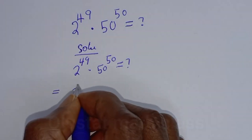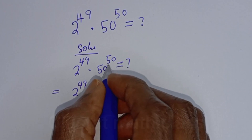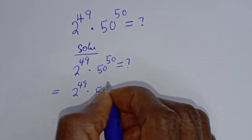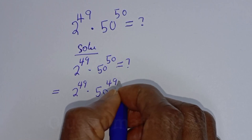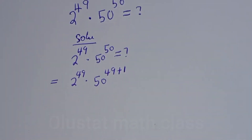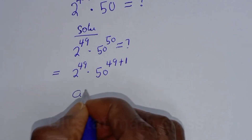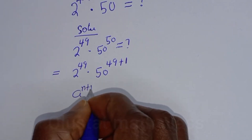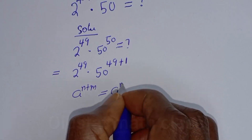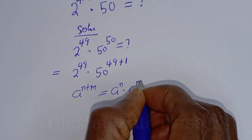2 raised to power 49 multiplied by 50 raised to power 50 can be written as 50 raised to power 49 plus 1. Take note of this exponential rule: if you have a raised to power n plus m, this is equal to a raised to power n multiplied by a raised to power m.